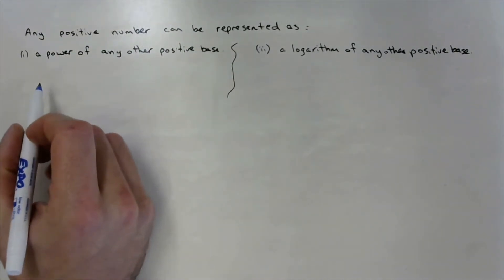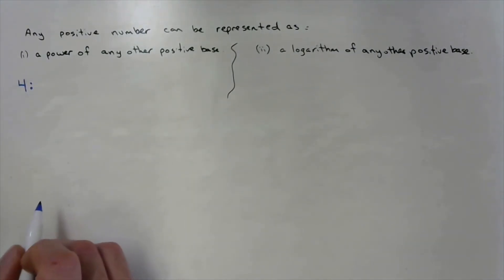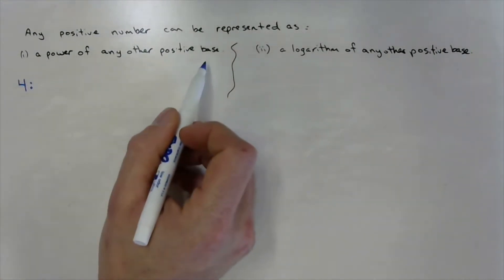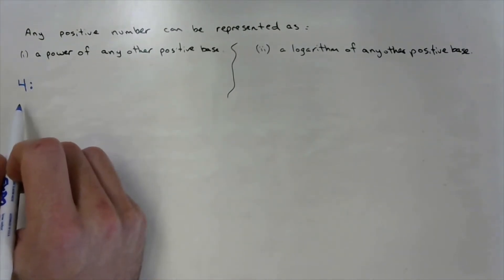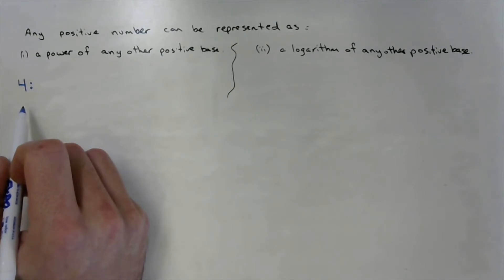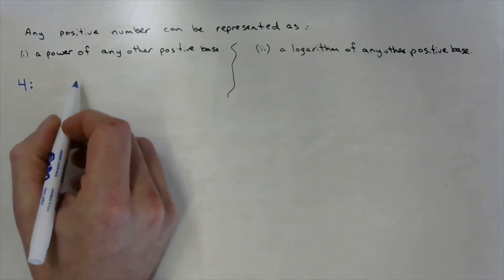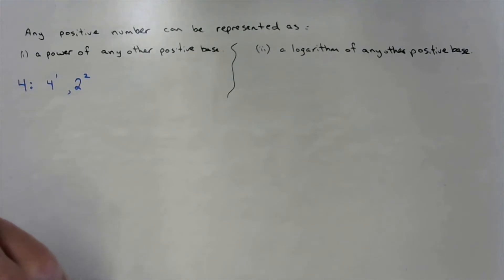Let's take an example. If we think about the number four, we could write it as a power of any other positive base. We could write it as four to the power of one, or two to the power of two.